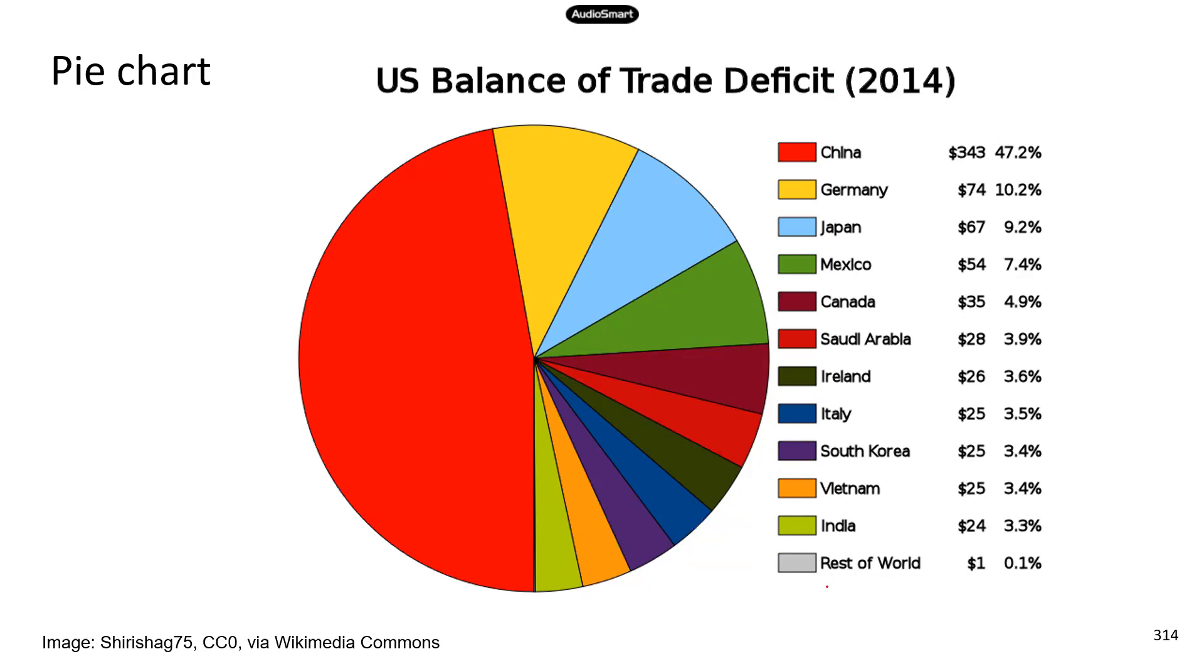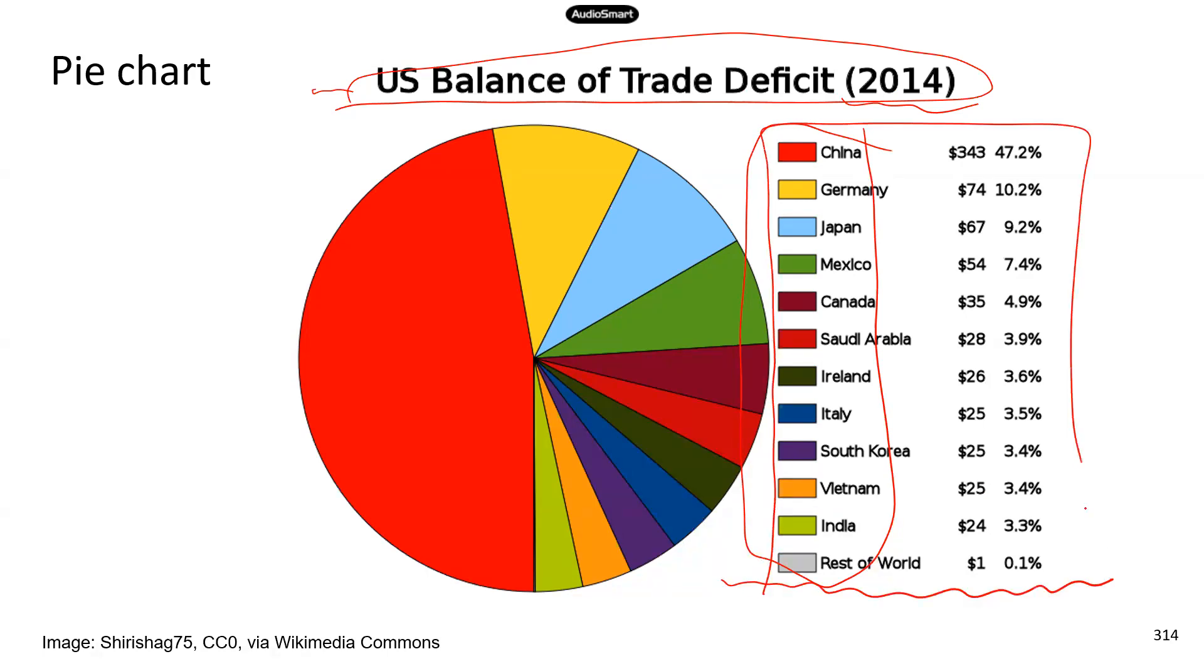So there is a title for this pie chart, which is nice. And this is about US balance of trade deficit, and this is 2014 data. So a lot of times the time is important because you need to know which data. Is the data from 2000 or is it from 2020? So the year of the data is critical. This is trade deficit between US and these countries. And over here, that's the chart legend.